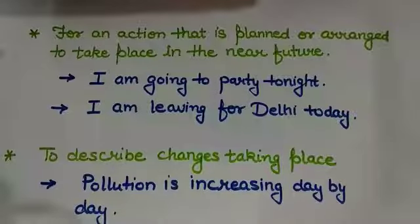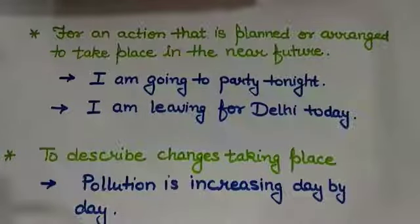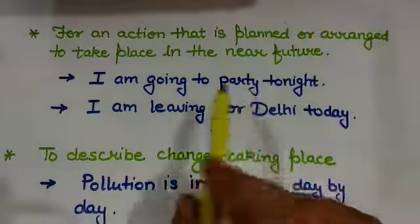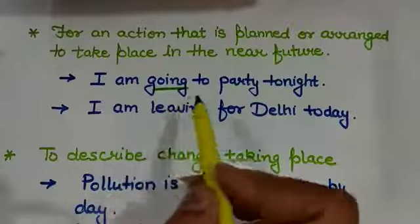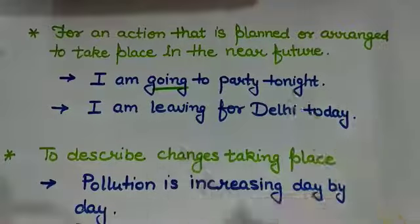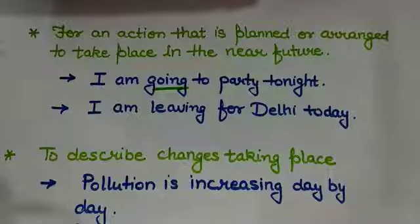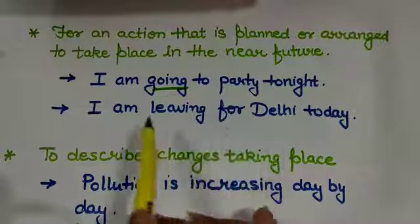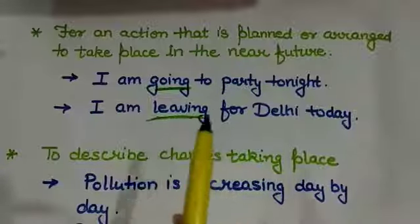Now, present continuous tense is also used for an action that is planned or arranged to take place in the near future. I have already planned that I am going to party tonight. It is a planning here. See, I have used continuous tense. So for such actions which are already planned but are going to happen in the near future, we use continuous tense. Like I am leaving for Delhi today.